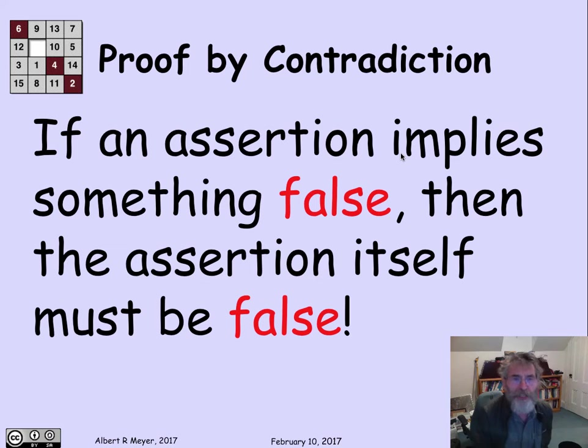So in general, proof by contradiction operates under this principle that if an assertion implies something that's false, then the assertion itself must have been false in the first place. That's really the definition of implies. If something true implies something else, the something else also has to be true. So if the original thing was true and it implied something, the conclusion would have had to be true, which means if the conclusion is false, the original thing must have been false. It really is such a basic principle of reasoning that we take it for granted and you probably never thought about it carefully. But now that I've highlighted it, you should be comfortable with it.